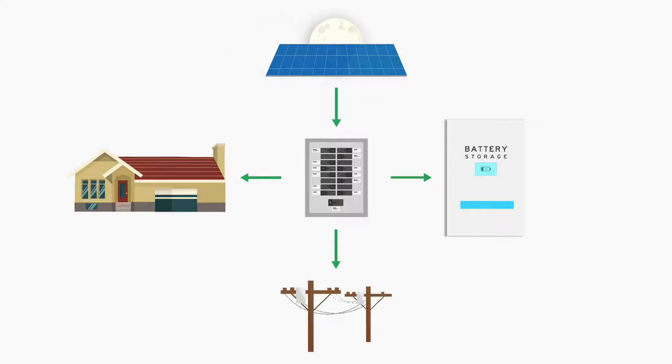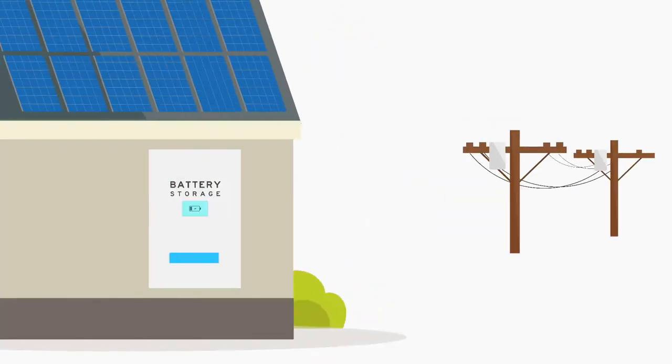At night, since you won't get any power from solar, you draw power from the battery, then from the grid, reducing the amount of energy you actually take from the grid as much as possible.